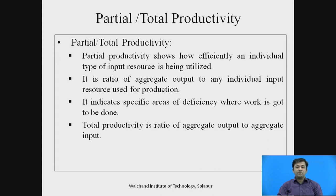If partial productivity is with respect to some specific resource or unit, total productivity is with respect to the total overall system. Total productivity is therefore defined as the ratio of aggregate output to aggregate input. When you read a balance sheet, those figures represent total productivity. Partial productivity acts at a local level such as department-wise, while total productivity acts at the company-wide system level.